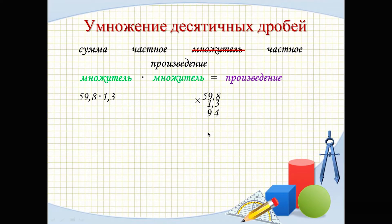5 × 3 = 15, plus 2 carried = 17. Next, we multiply by 1: 8 × 1 = 8, 9 × 1 = 9, 5 × 1 = 5. Now we add these two rows and get 4.